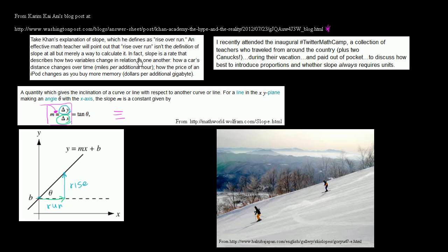And then the rest of the statement, in fact, slope is a rate that describes how two variables change in relation to each other, how a car's distance changes over time, how the price of an iPod changes as you buy more memory. And this is also kind of wrong. Slope can represent a rate of change if, but it depends on which variable is plotted on which axis. Slope is dependent, it's a visual thing. It really is, it's the vertical axis over the horizontal axis, especially when we're talking about the scenario in two dimensions.